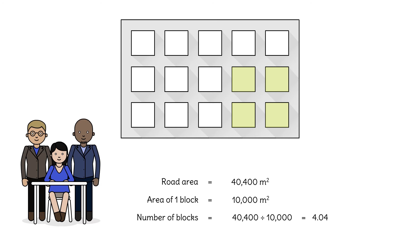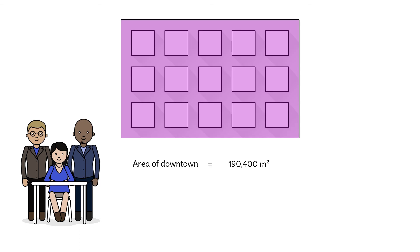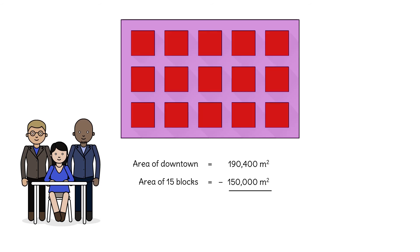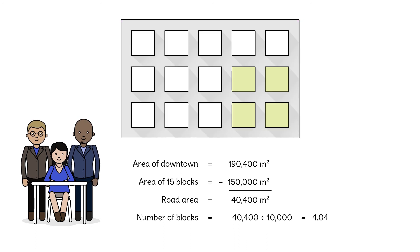Solving composite area problems requires creativity. First, we found the area of the downtown. Then we subtracted the area of the blocks. Finally, we divided to determine how many blocks need to be converted to parks.